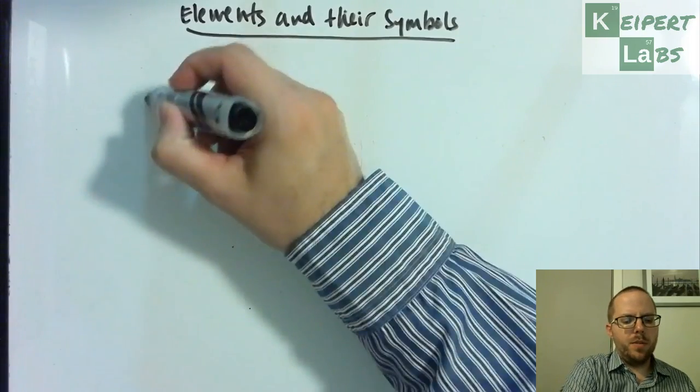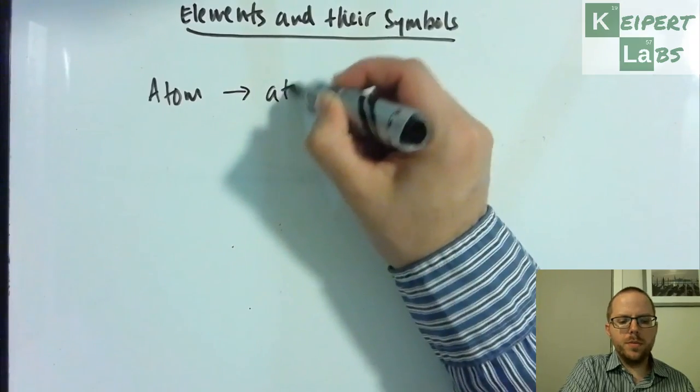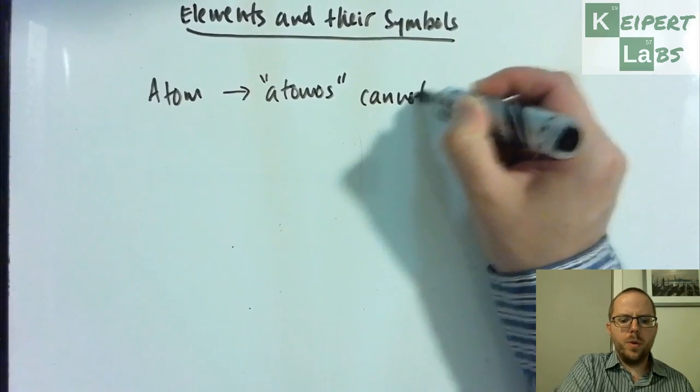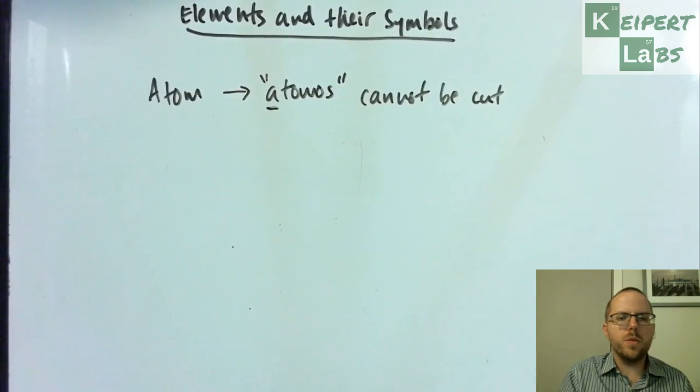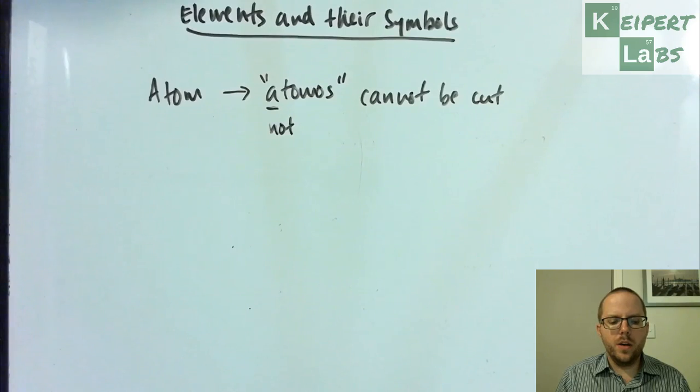So far we've introduced the concept of the atom, coming from the Greek word atomos which means cannot be cut or indivisible. When we use words from Greek, putting the letter A in front means the opposite or not. For example, typical is common or usual, and atypical is not common or unusual.